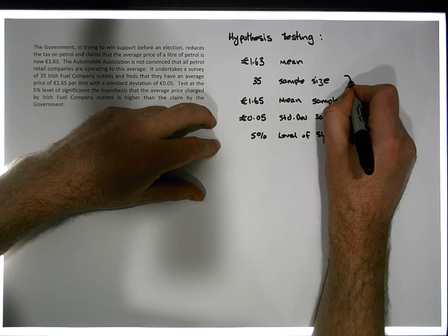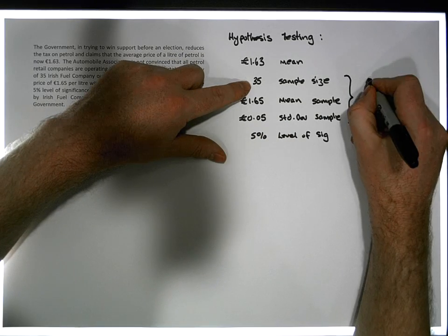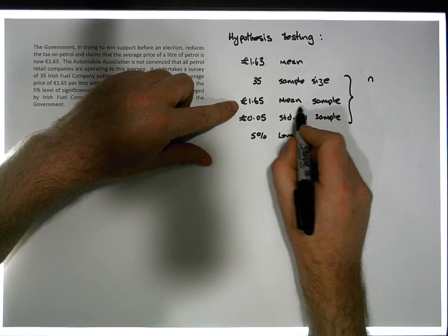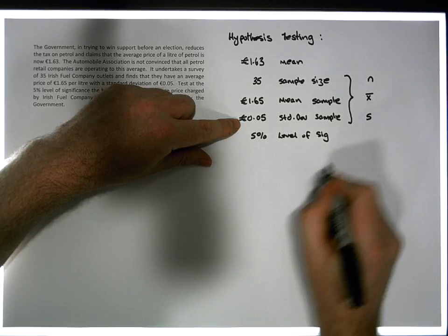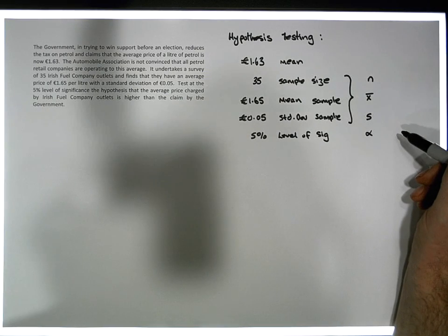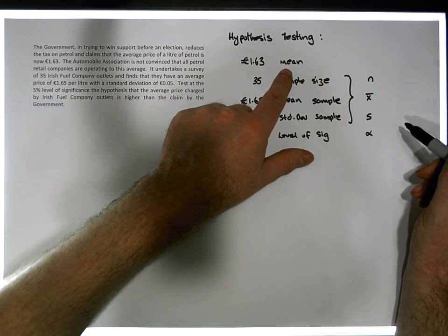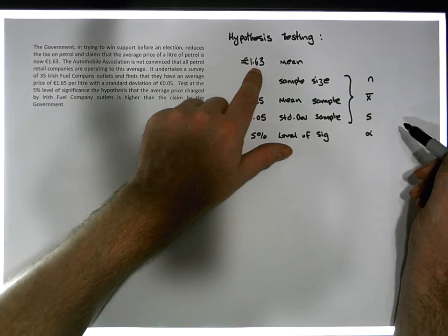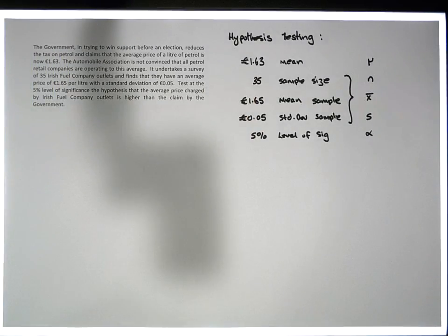Now let's associate the appropriate symbols with these numbers. The 35, €1.65, and €0.05 are tightly coupled together as sample information. The 35 is my sample size, small n. The €1.65 is my sample mean, x̄. The €0.05 is my sample standard deviation, s. The 5% is my level of significance, alpha. And what's left over is the €1.63 mean value — this is the hypothesized population mean, mu, the assertion being made by the government about what the population mean should be.